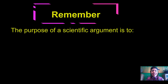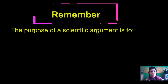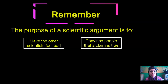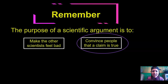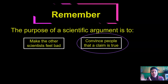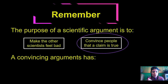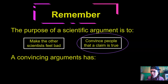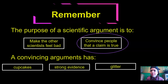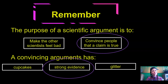We're going to be making a scientific argument. The purpose of a scientific argument is to convince people that a claim is true — not to make other scientists feel bad. A scientific argument uses all the evidence gathered to convince people a claim is true. And a convincing argument must have strong evidence. Cupcakes and glitter are great, but they do not help scientists make strong arguments.